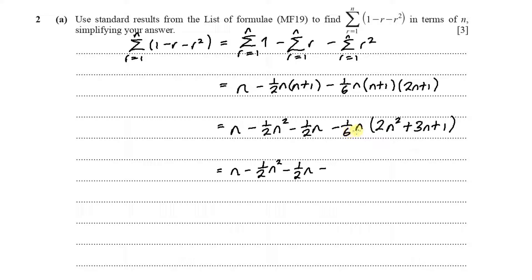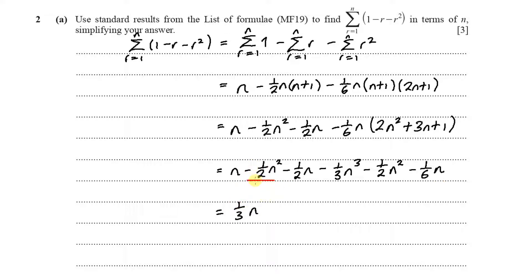Continuing to simplify: n minus half n minus one-sixth n gives one-third n. Then minus half n squared minus half n squared gives minus n squared. And multiplying out the cubic term gives minus one-third n cubed. So collecting all terms together we have one-third n minus n squared minus one-third n cubed.